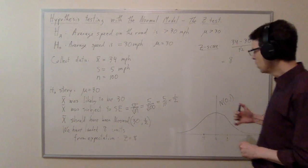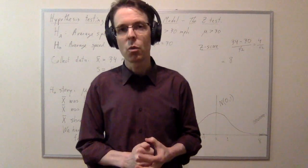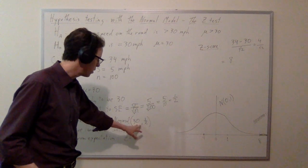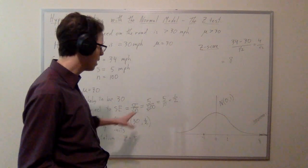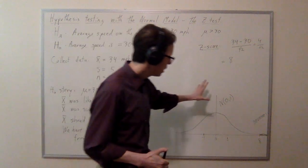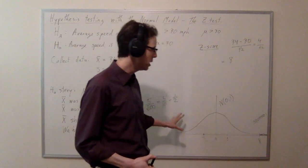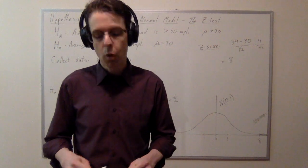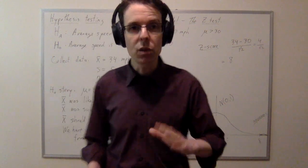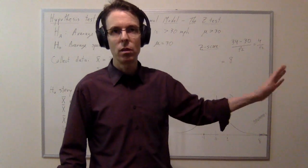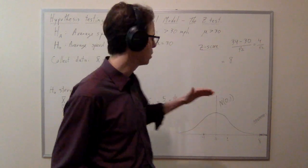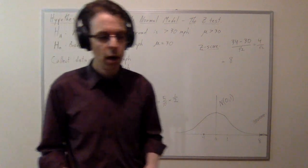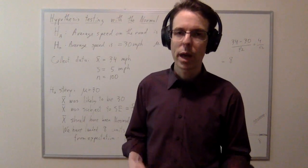We're calculating an area on the standard normal distribution using the z-score, which means we only need to calculate area on the standard normal distribution — we don't need to create an actual normal distribution centered at 30 with standard deviation 0.5. Tools can be designed to work only for the standard normal distribution. Now, 8 is way outside the norm of the normal distribution, so it's a very strong result. Let's see what changes if we had much less data.